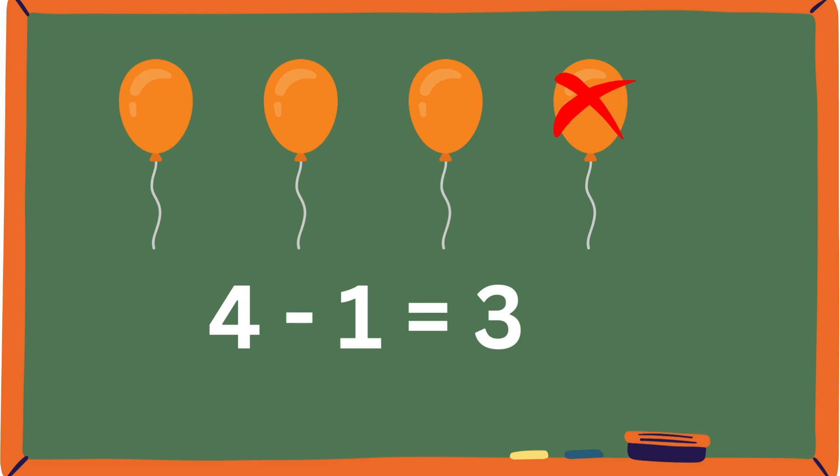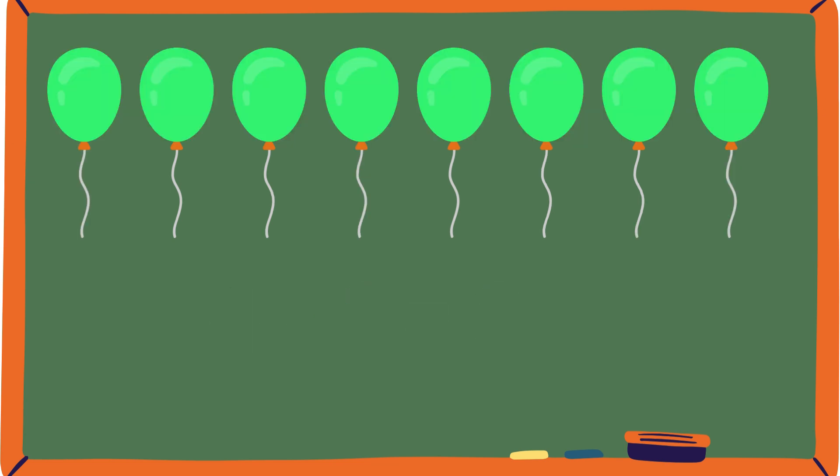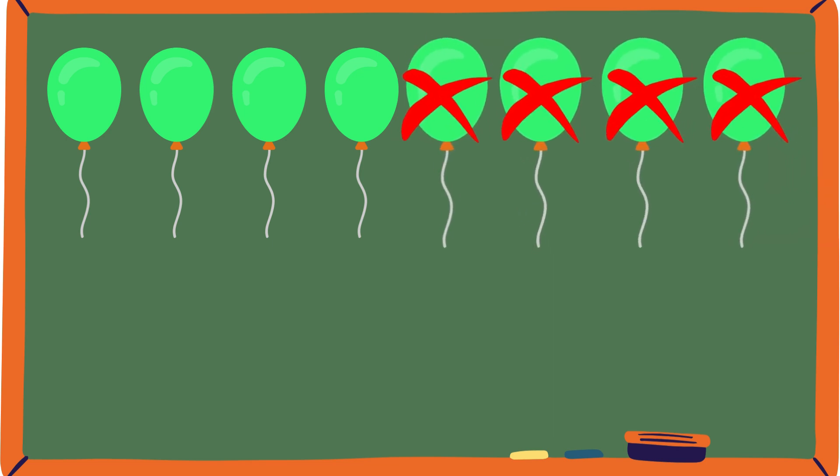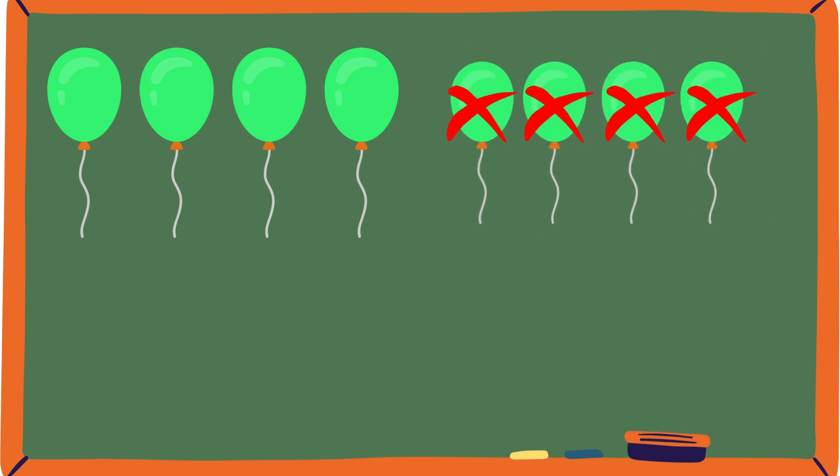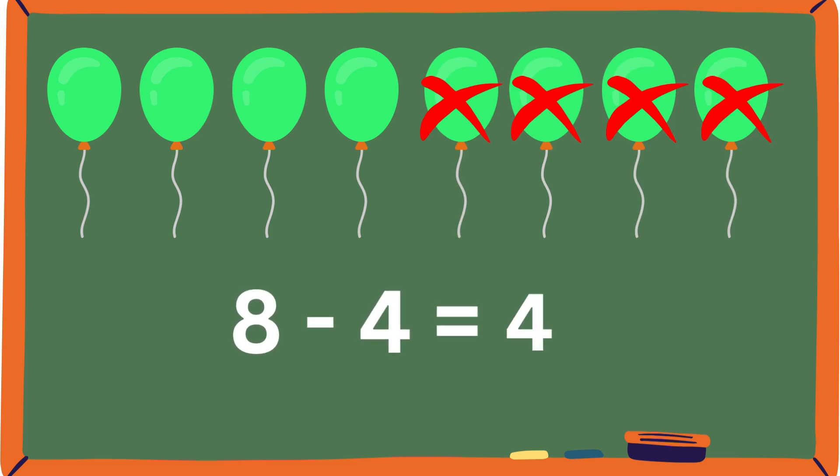Are we warmed up? Now let's start getting serious. Over here, there are 1, 2, 3, 4, 5, 6, 7, 8. 8 green balloons. 4 are popped. How many balloons are left? If you said 4, good job! And this is the equation for that. 8 minus 4 equals 4. Good job!